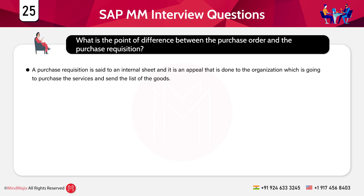The next question is: what is the difference between a purchase order and a purchase requisition? A purchase requisition is an internal document — it is an appeal made to the organization that is going to purchase services, along with a list of goods. A purchase order is a formal document sent to the vendor that contains the list of essential items that need to be procured from the vendor.